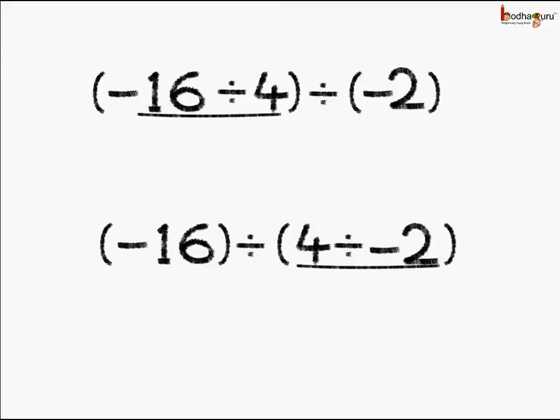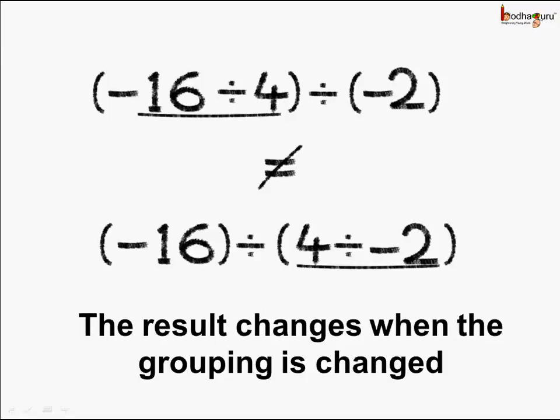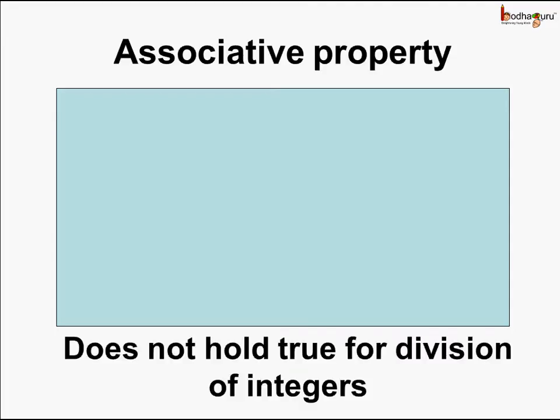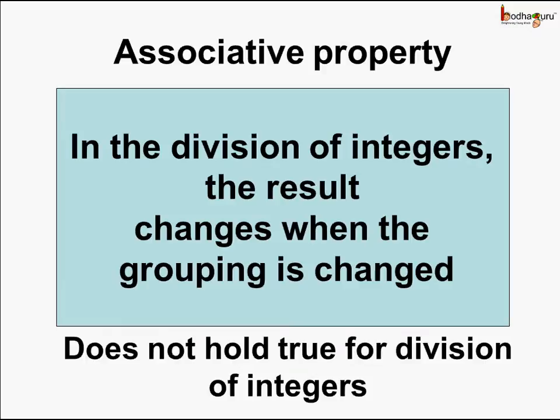What do we see? When we change the grouping while performing division of three integers, the answer is not the same — we got plus 2 in one case and plus 8 in the other. Thus the result changes when the grouping is changed, and this means the associative property does not hold true for division of integers.